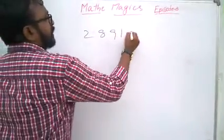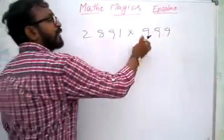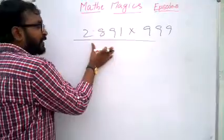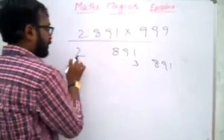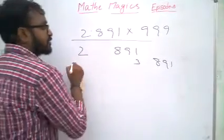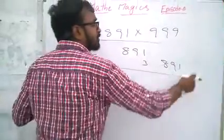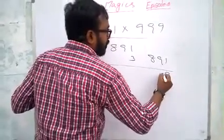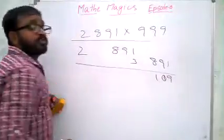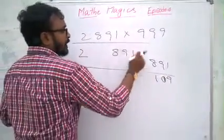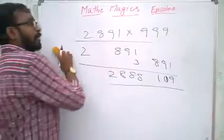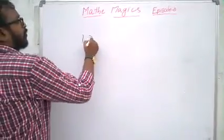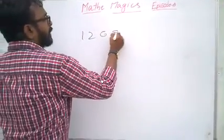Similarly, 2891 into triple 9 — 999 consists of three digits. Divide it into two parts: left part and right part. The right part should contain three digits because there are three nines. Write 891 again here, then add one to the left part — it becomes 3. 891's complement: subtract 1000, it becomes 109. Then 91 minus 3 is 88 — so the answer is 2888109. This is the product.